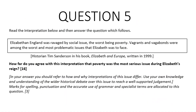Here we have our sample question to work on together — an Elizabeth question five. It says: 'Read the interpretation below and answer the question which follows. Elizabethan England was ravaged by social issue, the worst being poverty. Vagrants and vagabonds were among the worst and most problematic issues that Elizabeth was to face.' This was written by Tim Sanderson, a historian writing in his book called Elizabeth in Europe, written in 1999. How far do you agree with this interpretation that poverty was the most serious issue during Elizabeth's reign?